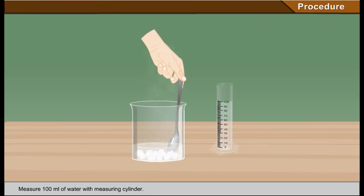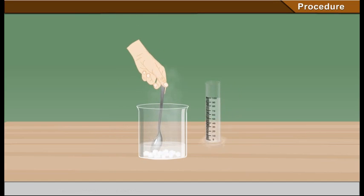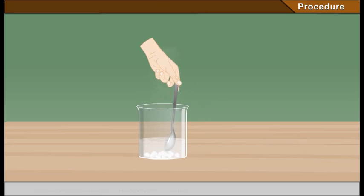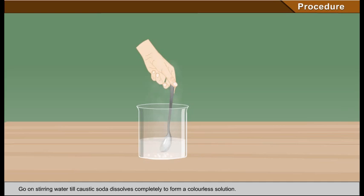Procedure. Measure 100 millilitres of water with measuring cylinder. Pour this water slowly in the caustic soda solution by constant stirring. Continue stirring till caustic soda dissolves completely to form a colourless solution.